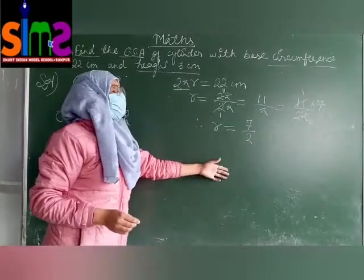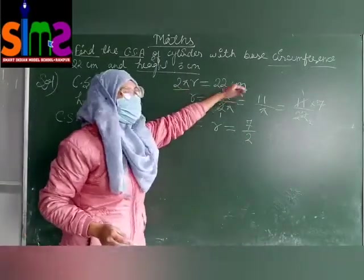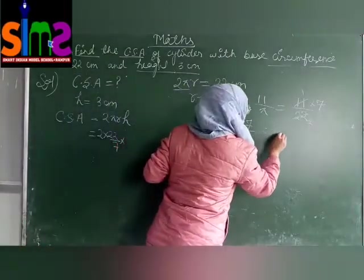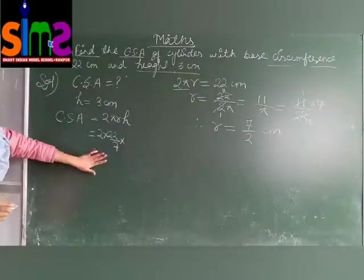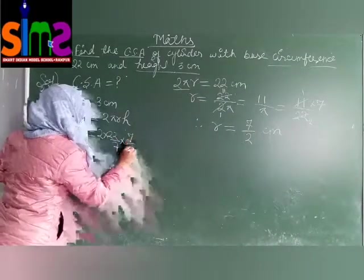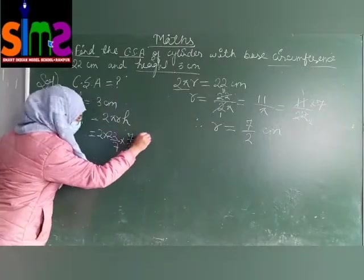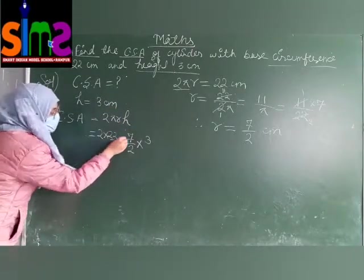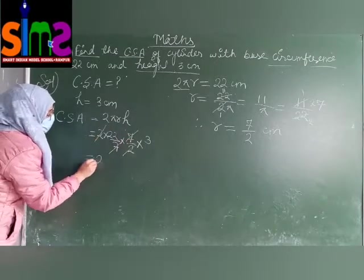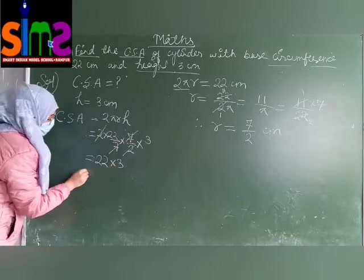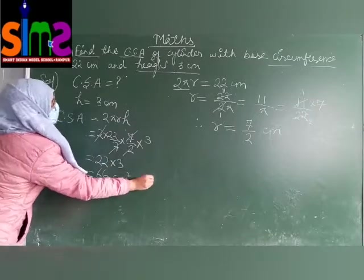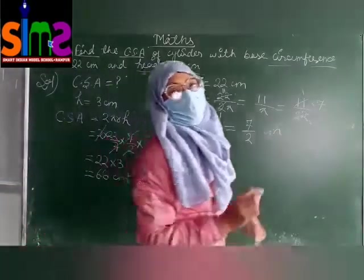What will be the unit? As the circumference is in centimeter, then the radius will also be in centimeter. Now, the value of r will be 7 upon 2. And the value of h is 3 centimeter. 7 is cut by 7. You will get 66 centimeter square. Yes, it is the answer of CSA.